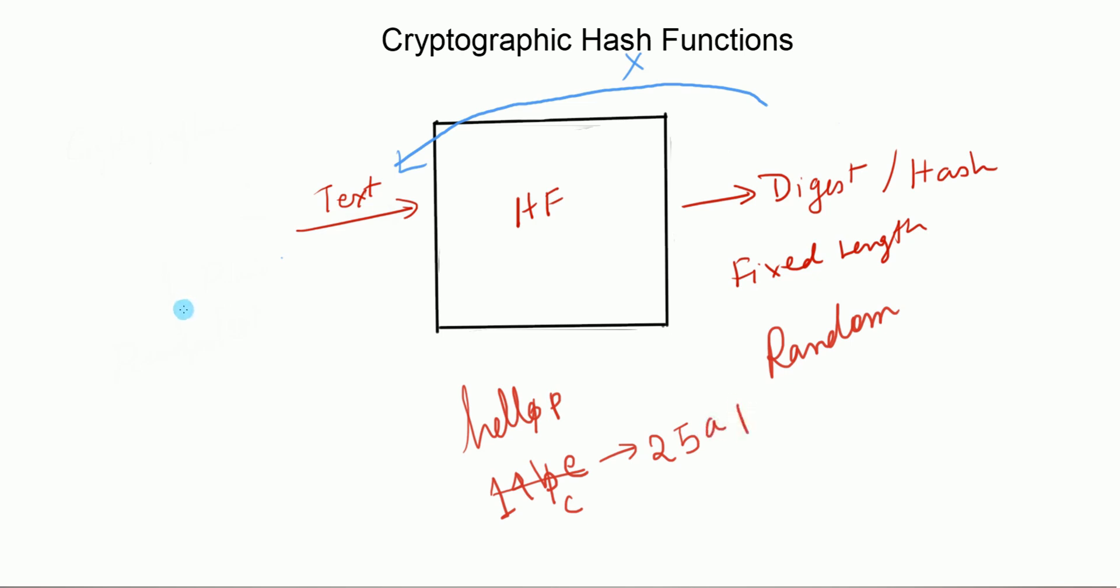When two values like T1 and T2 end up with the same digest, this thing is called a collision. Now our goal is to make our hash functions collision-free. There are proofs that there may be collisions in hash functions.